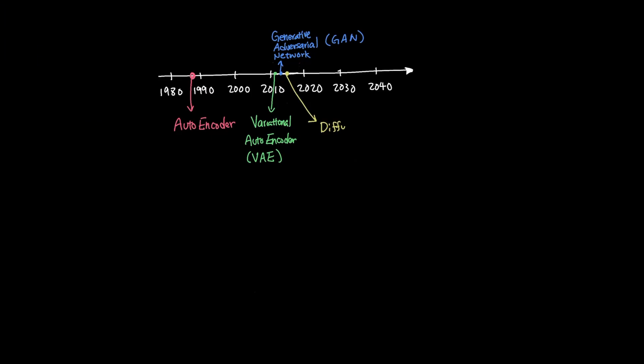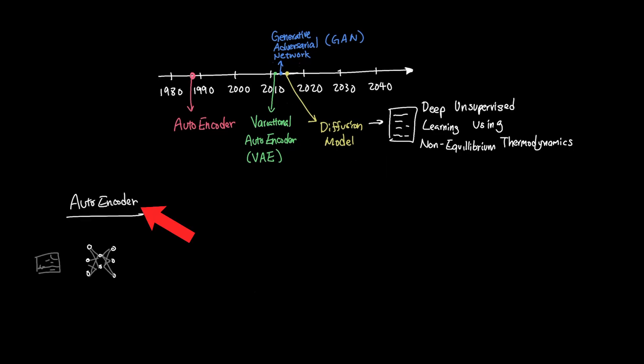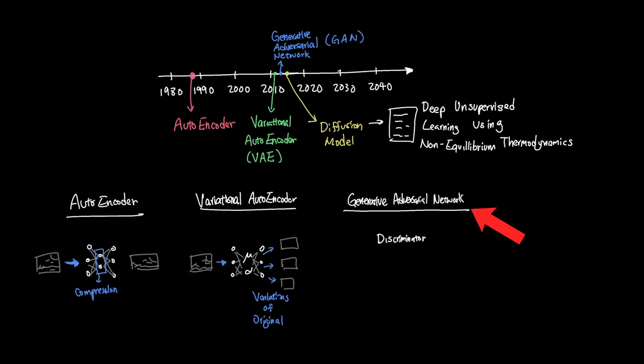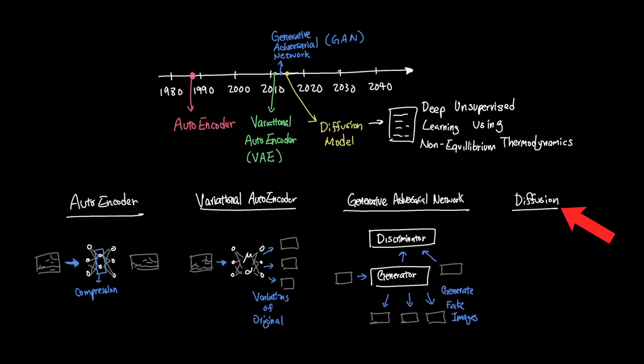While all of this was going on, in 2015, a research paper was released called Deep Unsupervised Learning Using Non-Equilibrium Thermodynamics. With this paper, a new concept emerged in AI called the diffusion model. So far, we have autoencoder that compresses the image, variational autoencoder that creates variations of the original image, generative adversarial network that creates the best fake image it can, now a diffusion model that proposed a completely different way of generating new images.